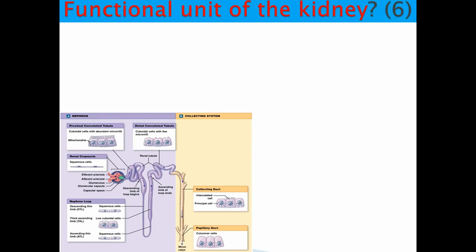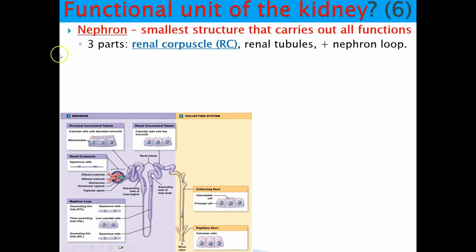The functional unit of the kidney — when we first started, we said the kidney lobe was the functional unit at a macroscopic perspective. But when we talk about the final unit that actually does everything microscopically, the most specific functional unit is the nephron. Don't think kidney lobe is always the answer — it's the macroscopic functional unit, but nephrons carry out all the specific functions.